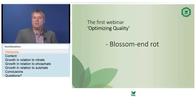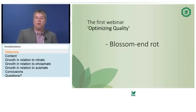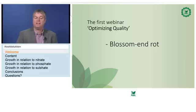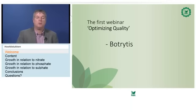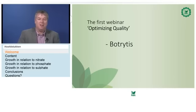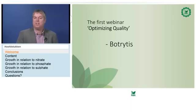Before we start this second webinar, I want to give the highlights from the first webinar. We saw that on social media there are a lot of discussions about blossom end rot. We explained that calcium is very important to avoid it — more calcium means less blossom end rot. Also with botrytis: take care of your calcium uptake, because more calcium helps you avoid botrytis.